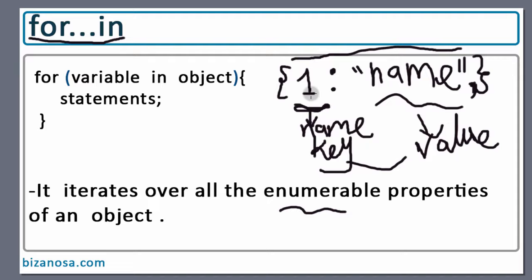...you can make them enumerable. If you're going deeper into creating object properties, then you can make them enumerable or non-enumerable. But in most cases, the properties you create by default will always be enumerable, and therefore you can use a for...in loop with them.